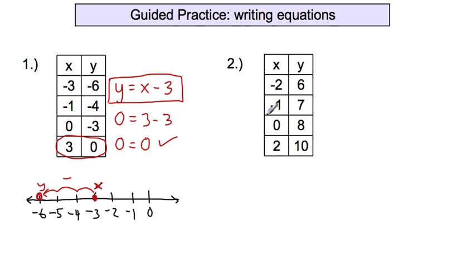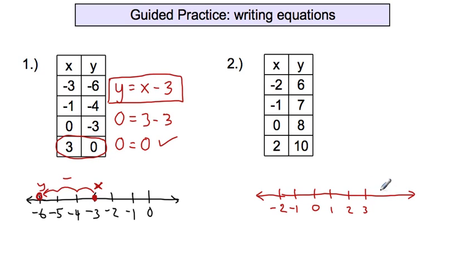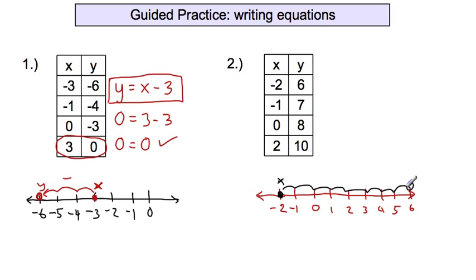Here we are with number two. We have a number line where negative 2 and 6 have to fit on it, so this one has to be slightly larger. Here would be negative 2, negative 1, 0, 1, 2, 3, 4, 5, and positive 6 over there. If I started at x equals negative 2, where am I moving to get to y equals 6? I'm moving to the right — how many spaces? One, two, three, four, five, six, seven, eight spaces. So that's a plus 8. y equals whatever x is plus 8.